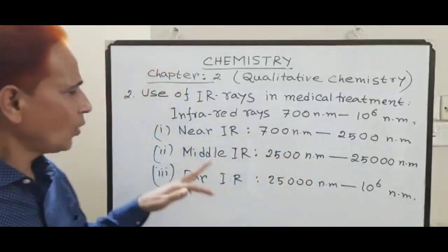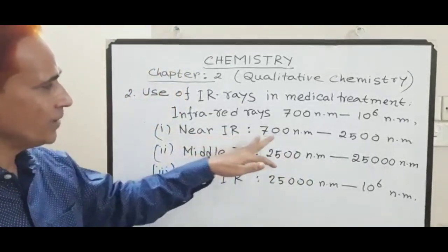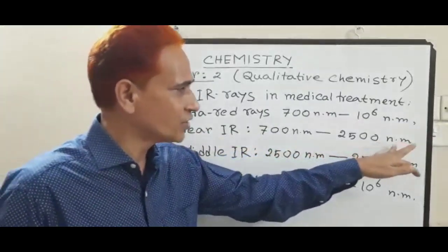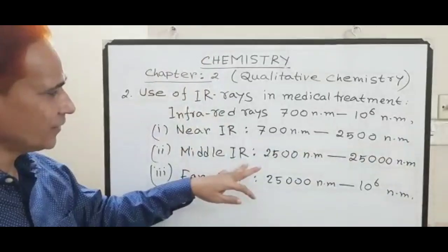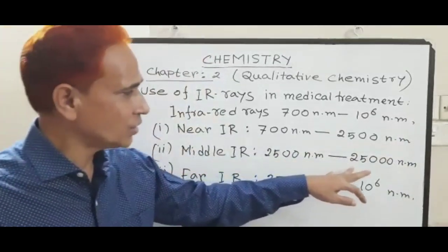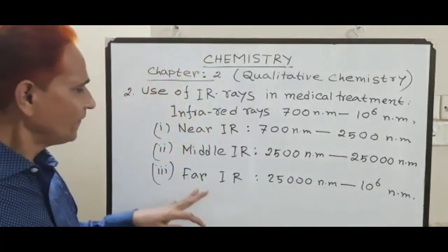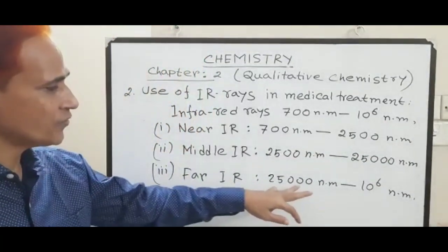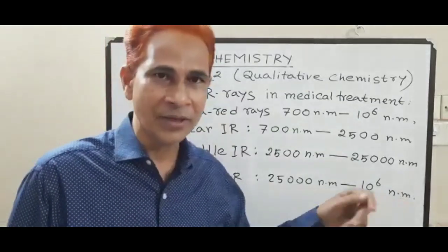Number 1, near infrared: wavelength 700nm to 2500nm. Number 2, middle infrared: wavelength 2500nm to 25000nm. Number 3, far infrared: wavelength 25000nm to 10⁶nm.